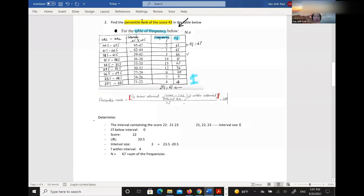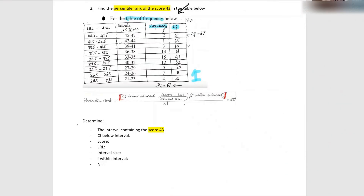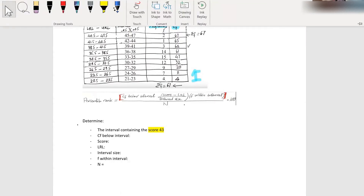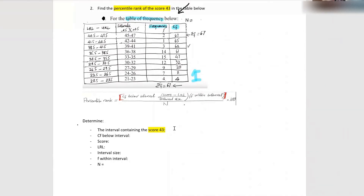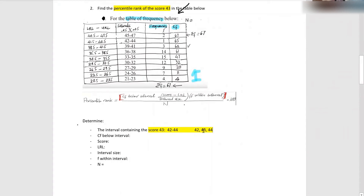Find the percentile rank of the score 43 in this table. Before you plug the numbers into the formula, let's check the numbers first. Evelyn, what is the interval that contains the score 43? 42 to 44. Let's check — 42 to 44 contains 42, 43, 44. Good, the 43 is in there.